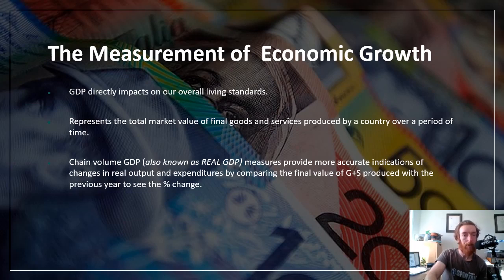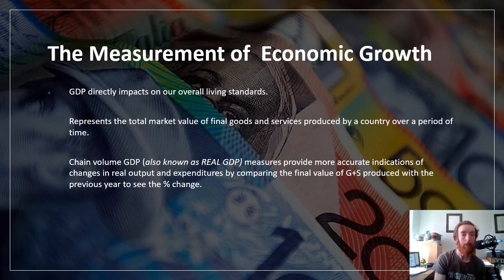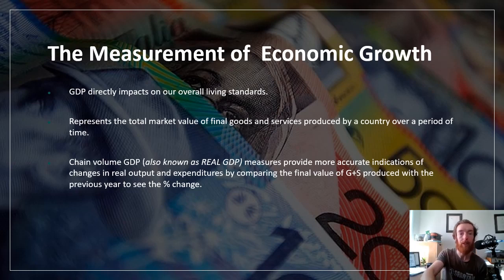Chain volume GDP, also known as real GDP — those two terms are interchangeable — measures provide a more accurate indication of changes in real output and expenditures by comparing them to the final value of goods and services produced in the previous year to see the percentage change. Essentially, by taking out the effects of inflation, we're seeing how much we're growing in comparison to the previous year.